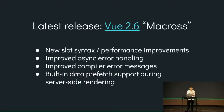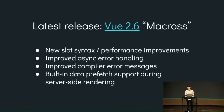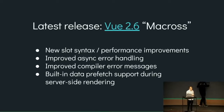We also have improved compiler error messages — if you make a syntax error in a template, you now get a code frame that points to exactly where you made the mistake. This is thanks to a very impressive pull request from a community member submitted a long time ago, and I have to apologize for waiting so long before merging it.